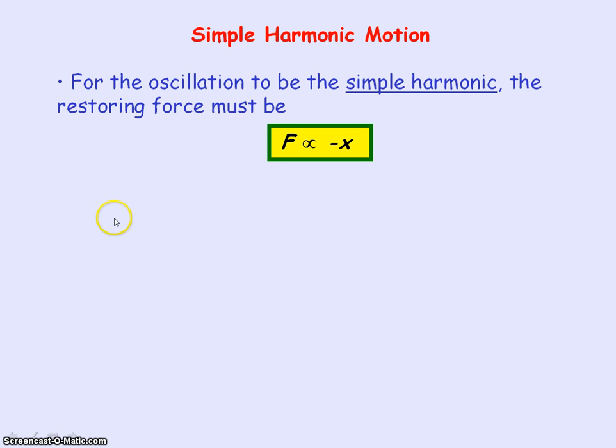If the oscillation is simple harmonic, then the restoring force must be proportional to negative displacement. The reason why we have the negative sign is to indicate that the force is acting towards the equilibrium position, or in the opposite direction of the displacement.